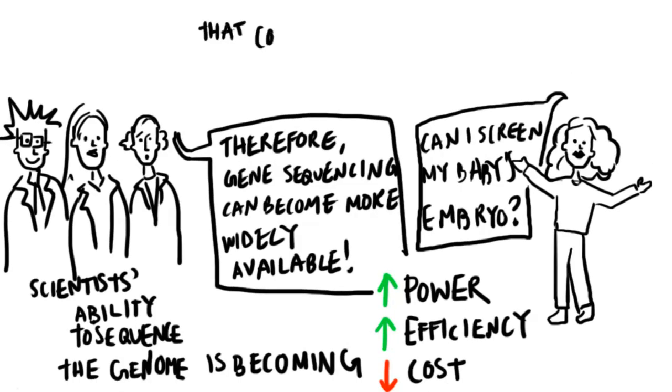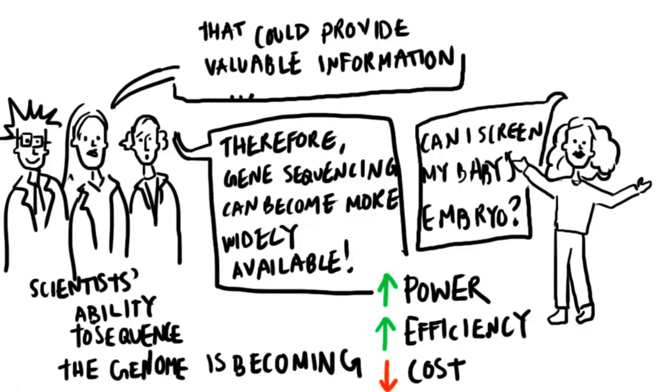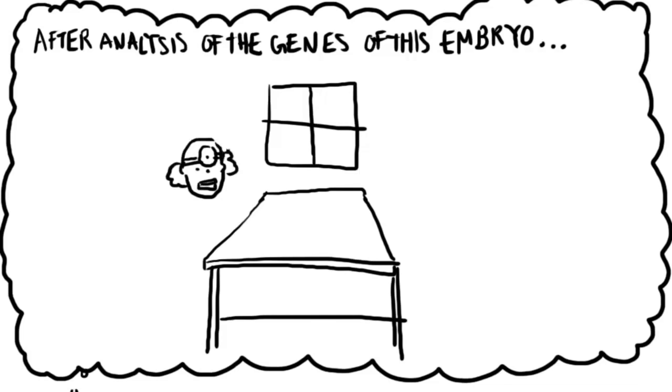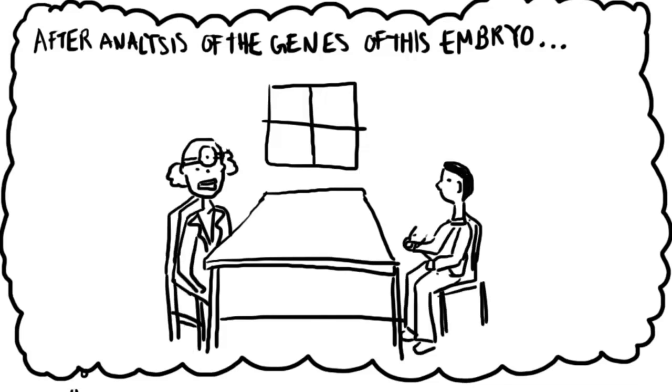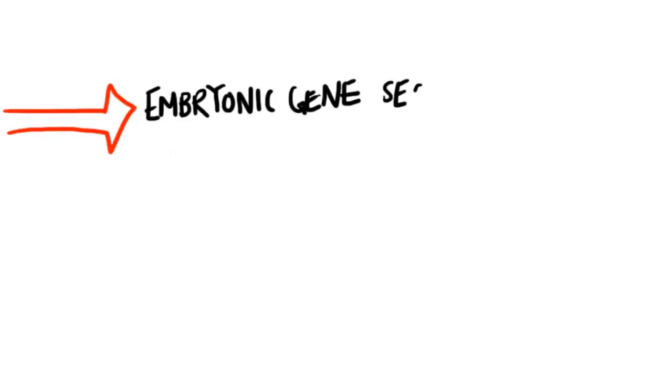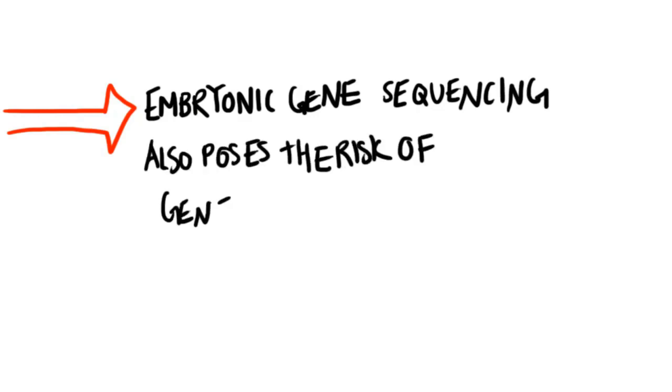On the one hand, this could provide valuable information about the future health of the child before they're born. Analysis of the genes of an embryo would yield predictors of medical conditions a child could face. Parents could be alerted about potential life-threatening illnesses, and doctors could determine the child's predisposition to illnesses like Huntington's disease or breast cancer. But, on the other hand, depending on what traits are screened for, gene sequencing also poses the risk of genetic discrimination.